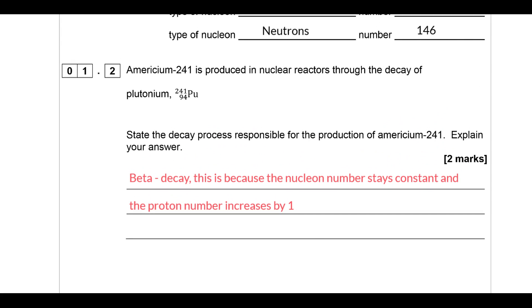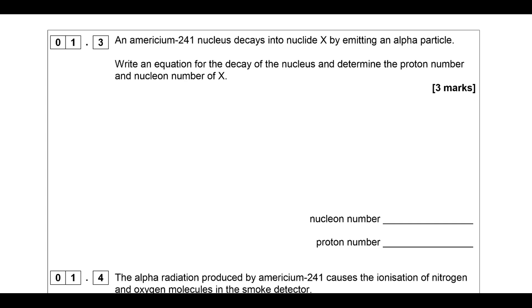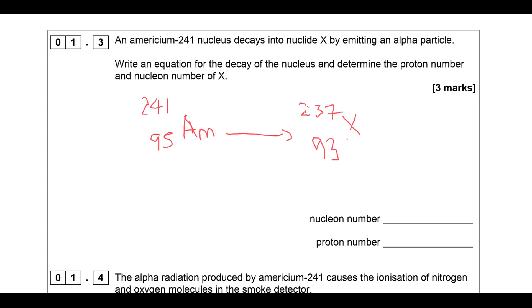Moving on to the next question: americium-241 decays into nuclide X by emitting an alpha particle. Write the equation for this decay and determine the proton number and nucleon number of X. So americium-241 with proton number 95 decays - it loses four nucleons, giving 237, and loses two protons, giving 93, leaving us with nuclide X, plus an alpha particle (helium nucleus) also being produced.